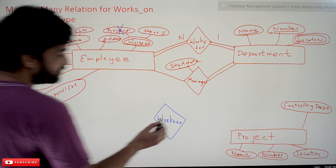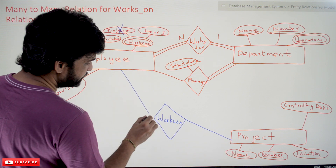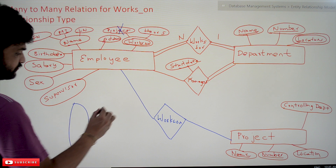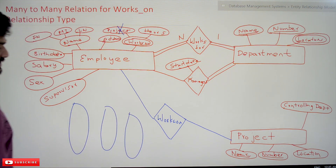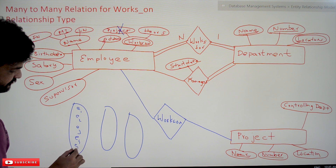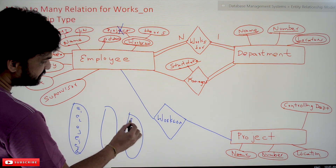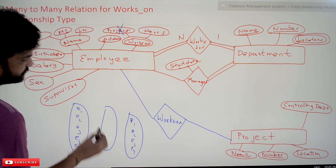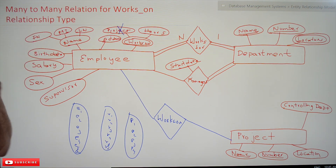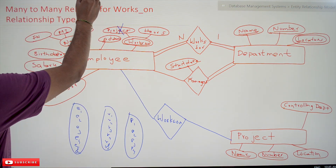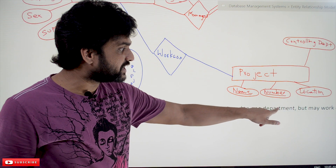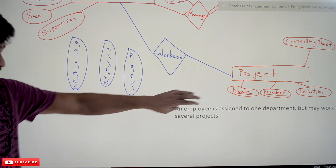Now, what about the cardinality ratio and participation? The relationship is between the entity types employee and project. We have discussed relationship instances in our previous class. Here we are going to have entities e1, e2, e3, e4, e5, e6 and projects p1, p2, p3, p4, with relationship instances r1 through r6. Let's recap the requirements provided.